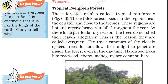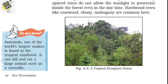The important tropical rainforest is located in Brazil — the Amazon forest. It is called the 'lungs of the earth' because, just as lungs provide oxygen to us, the Amazon forest provides a major amount of oxygen to the earth. Also notable: the anaconda, one of the world's largest snakes, is found in the tropical rainforest and can kill and eat large animals such as crocodiles.